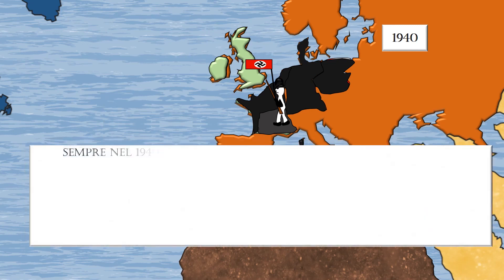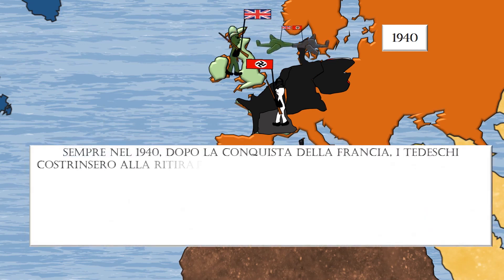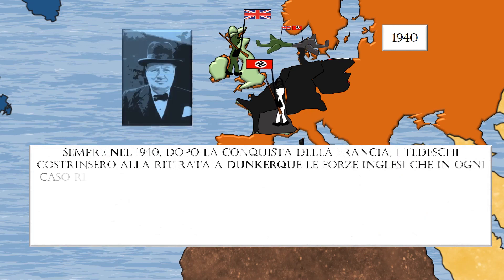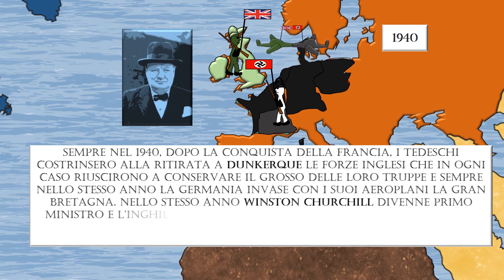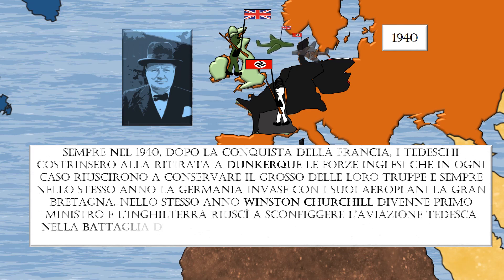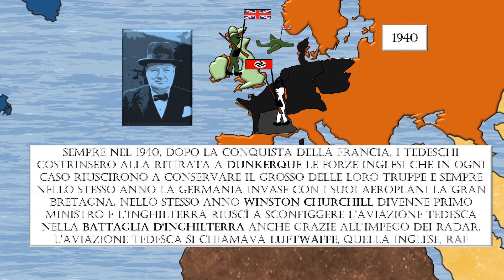In 1940, after the conquest of France, the Germans forced the British forces to retreat to Dunkirk, who managed to retain the bulk of their troops. In the same year, Germany bombed Britain with its airplanes. Winston Churchill became Prime Minister, and England was able to defeat the German Air Force — the Luftwaffe — in the Battle of Britain, partly through the use of radar. The British Air Force is called the RAF.